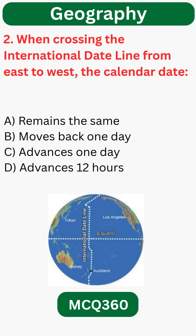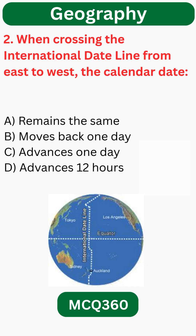When crossing the international date line from east to west, the calendar date? C. Advance one day.